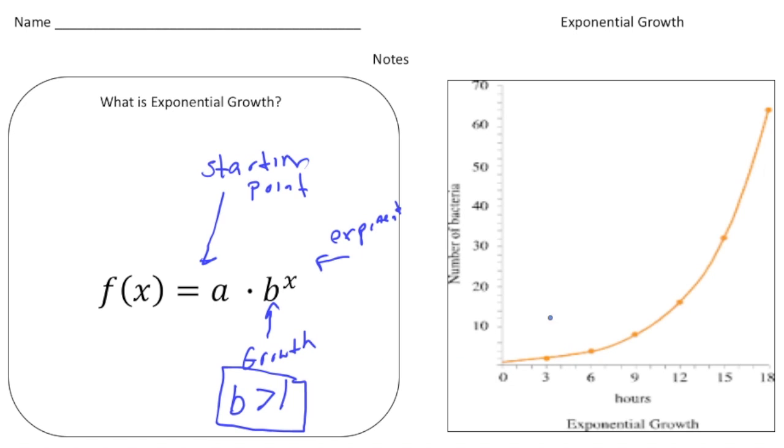All right, so take a look at this graph over here. Remember we always read graphs left to right, and look what happens to the y values as we go across here. Here it looks like the y value is around maybe two. And here the y value is maybe around four. And then here it's around eight. And now we're at 16 and 32.